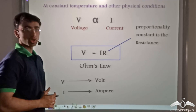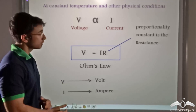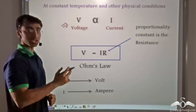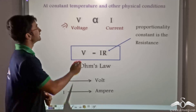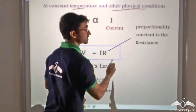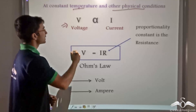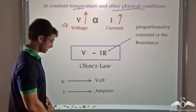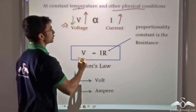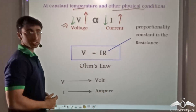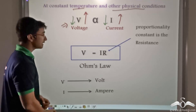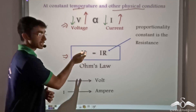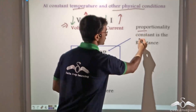Let us take a quick recap of what Ohm's law stated. Ohm's law stated that voltage across a given conductor is directly proportional to the current flowing along the conductor, provided that temperature and all other physical conditions remain constant. So if we increase the voltage, the current flowing will also increase. Likewise, if we decrease the voltage, the current will also decrease. Now we have a relation of proportionality. In order to convert it into a relation of equality, we introduce a proportionality constant R.